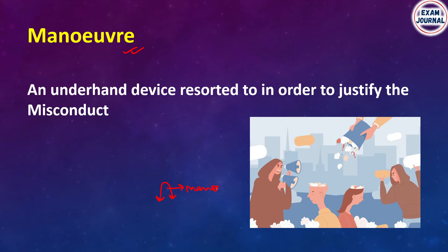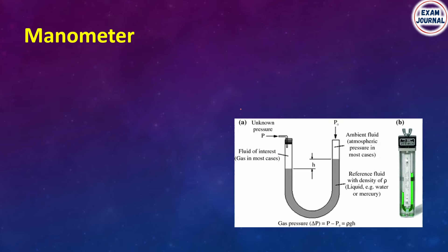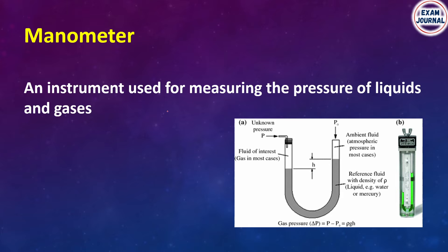This is a very important word for your spelling — you must remember it. Manometer is used to measure the pressure of liquids and gases. It is an instrument used for measuring the pressure of liquids and gases. This is a manometer.